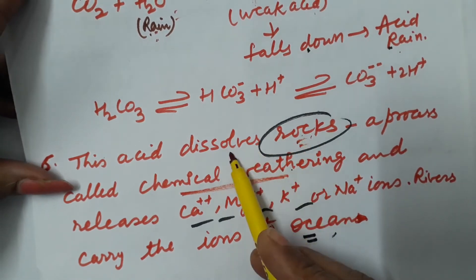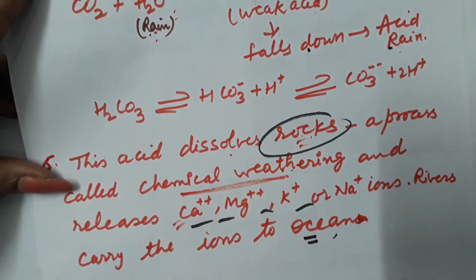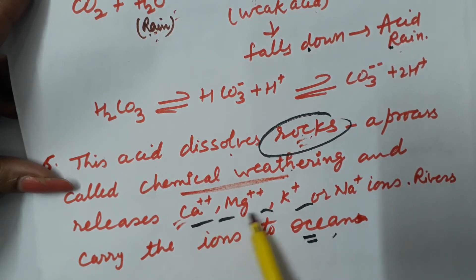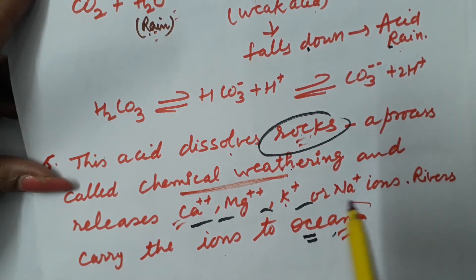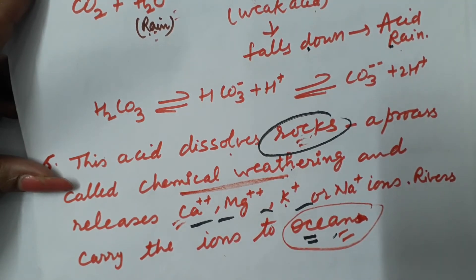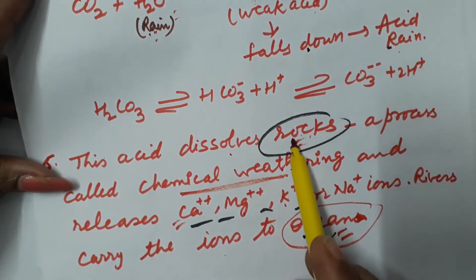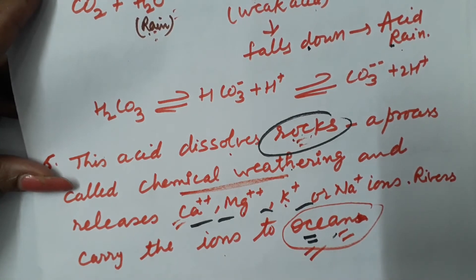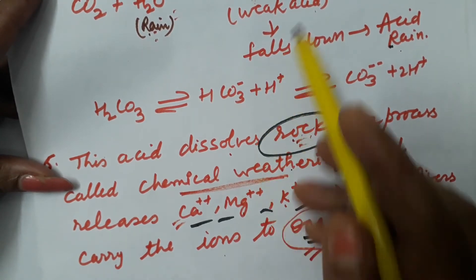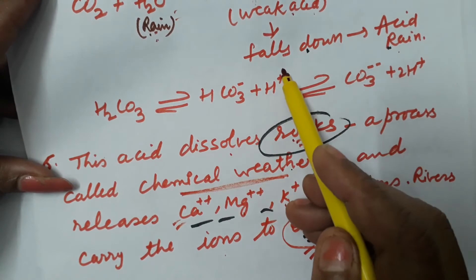This process is known as chemical weathering. Rocks are the sources of minerals. When chemical weathering takes place, rocks dissolve and certain minerals are released like calcium, magnesium, potassium or sodium ions, and along with the water they reach the oceans. Oceans are the reservoir of minerals, so by disintegration of rocks, minerals reach the oceans. This carbonic acid is a weak acid which falls down along with the water — this is called acid rain.